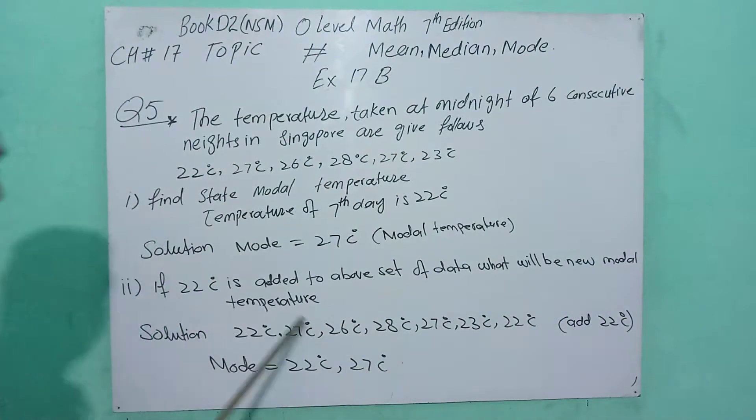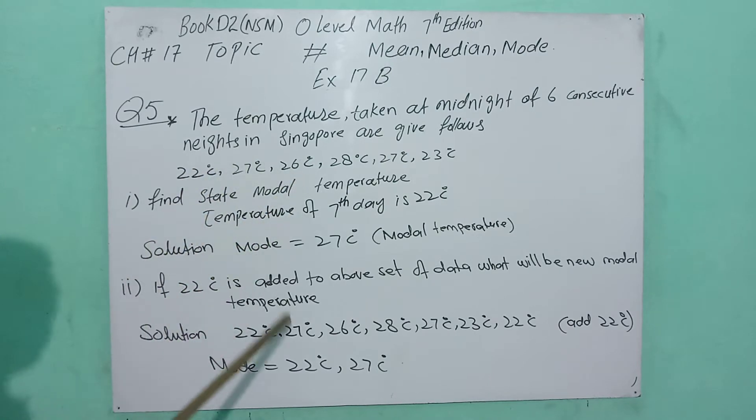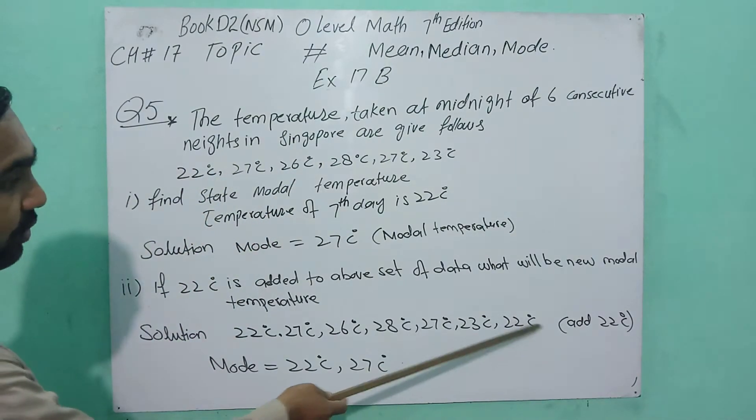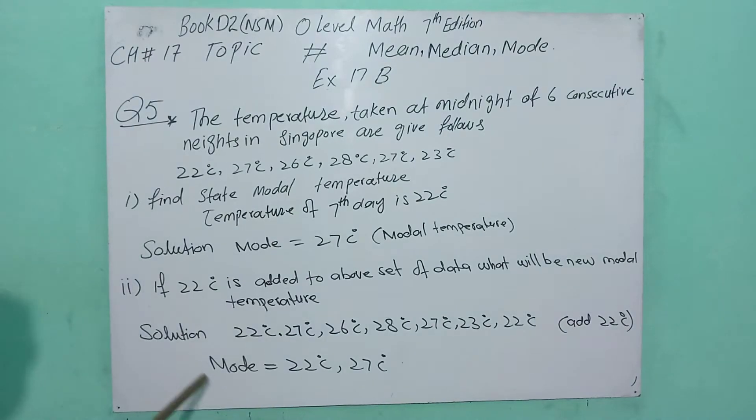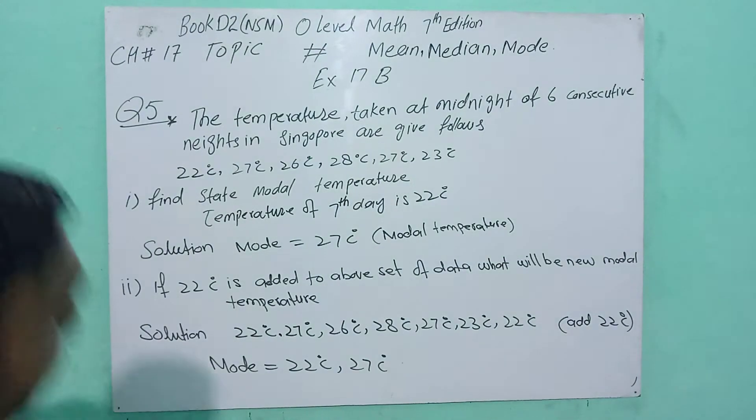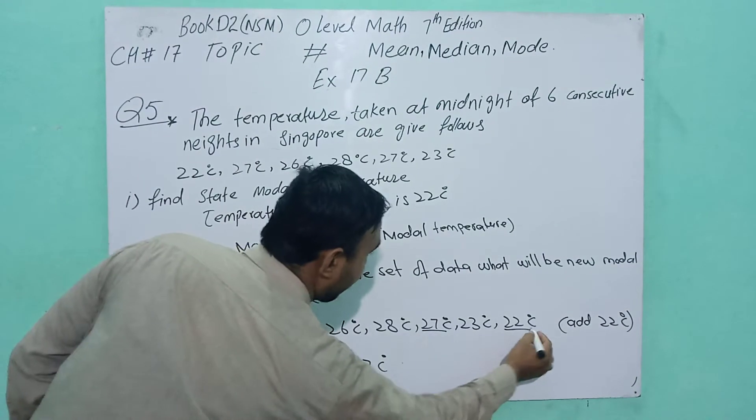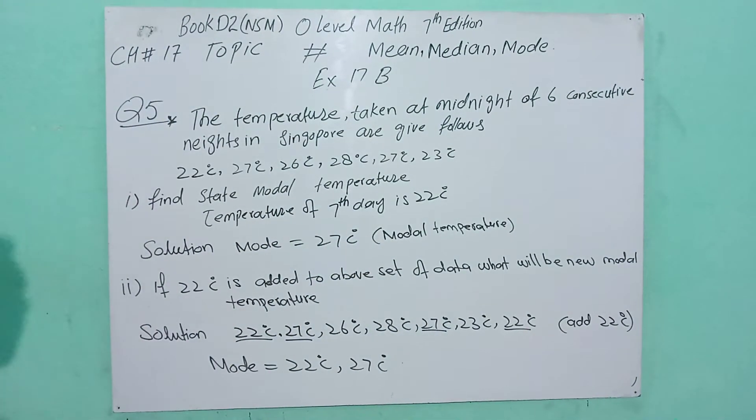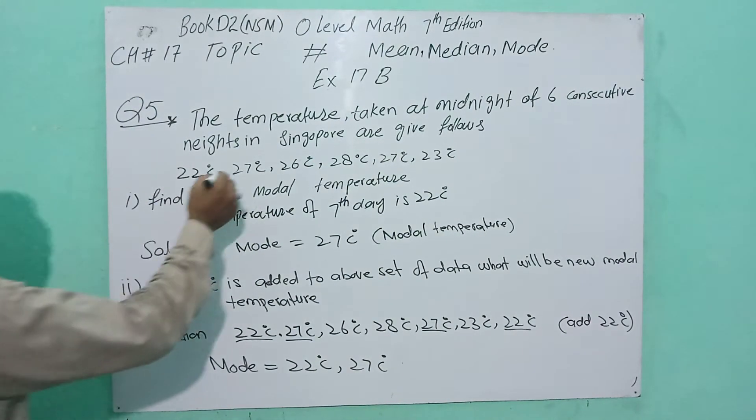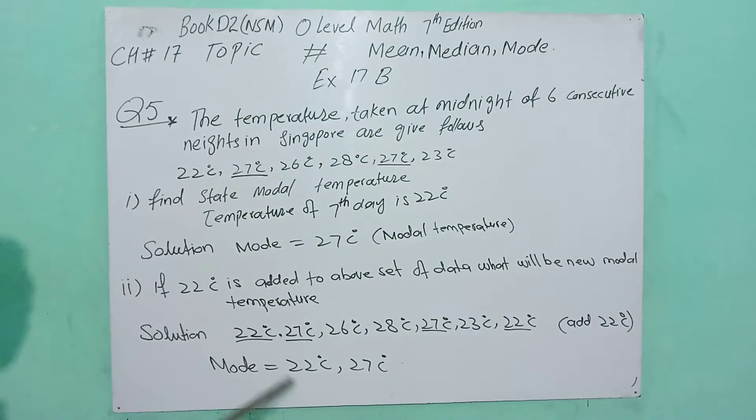What will be the new modal temperature? If we add 22, this is the new dataset. Now the mode is 22 and 27. First 27 appears twice, second 22 appears twice. There are two modes: 27 and 22. The mode is 27 and 22.